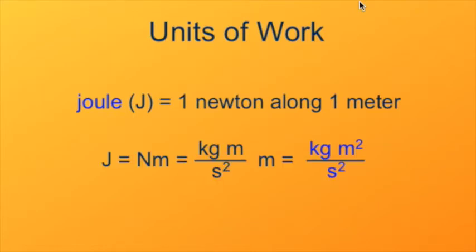You can break it down into its fundamental units, the fundamental units of distance, mass, and time. So a Newton recalls a kilogram meter per second squared multiplied by a meter. We end up with kilogram meter squared per second squared as being the composition of the joule.